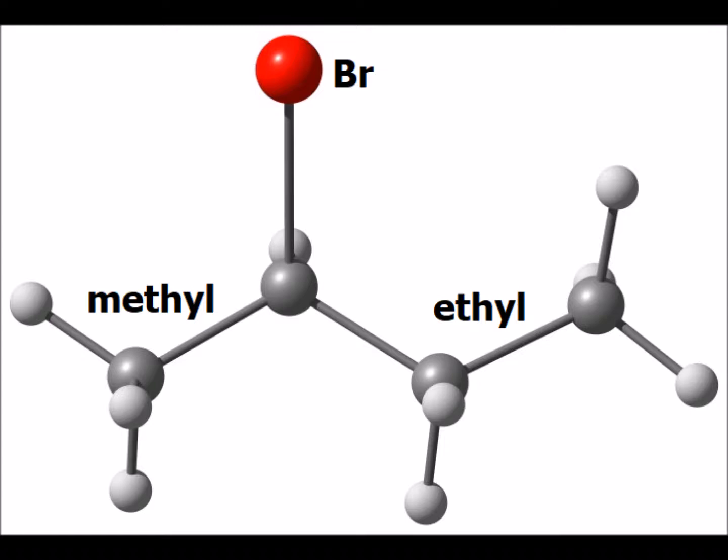Notice that this product is also chiral because attached to the second carbon from the left, we have a hydrogen pointing to the back, pointing up we have bromine, to the left we have a methyl group, and to the right we have an ethyl group. Since we have four different substituents on this carbon, it is a chiral carbon, and we have an optically active product.